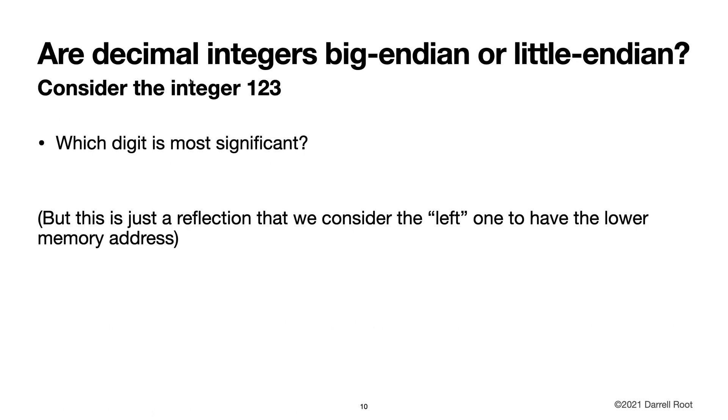So here's an interesting question. Are decimal integers big Endian or little Endian? Consider the integer 1, 2, 3. Which digit is most significant? Well, that would be the left digit. So, when we're doing decimal math, we're doing it in a big Endian way because the most significant digit is the one to the left, which we consider to have the lowest memory address when we're diagramming stuff.